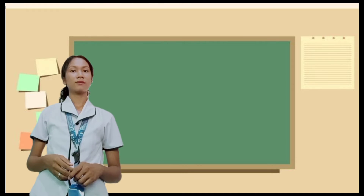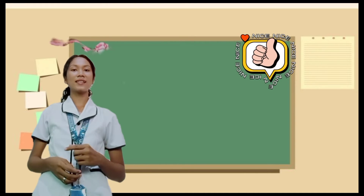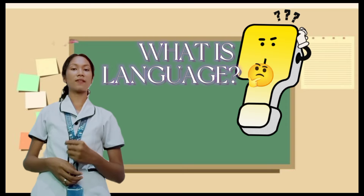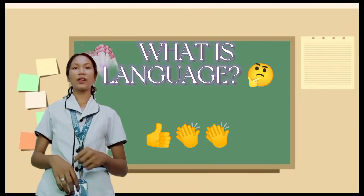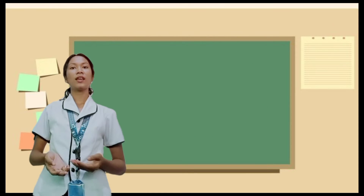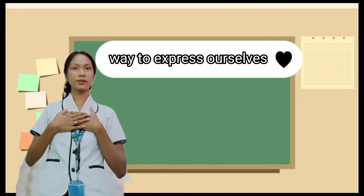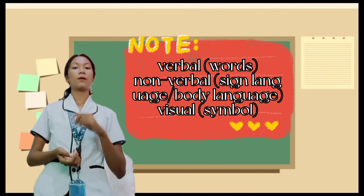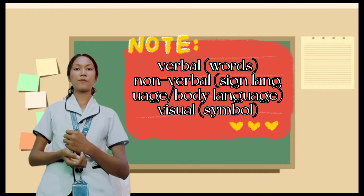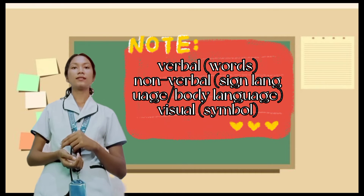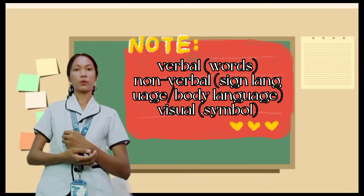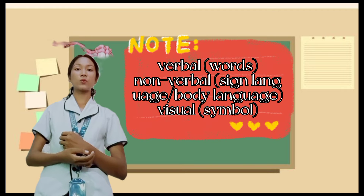Very good — that instrument is language! So now, what is language? According to what you said earlier, very good — it is a system of communication. When we say system of communication, it is our way to express ourselves. First, we have the verbal — talking, speaking, singing, etc. Second is the non-verbal, also known as body language or tone. And the last one is the visual, or symbols.